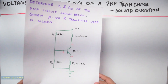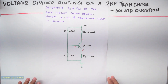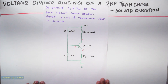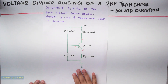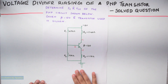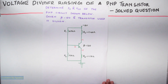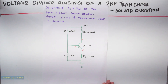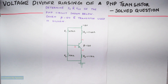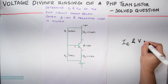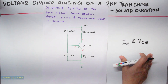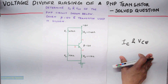This is the question. Determine IC and VCE of the PNP circuit shown below. Given that beta is 120 and the transistor used is silicon. So we have to find IC and VCE of the circuit. IC and VCE means we have to find the operating point of the circuit.